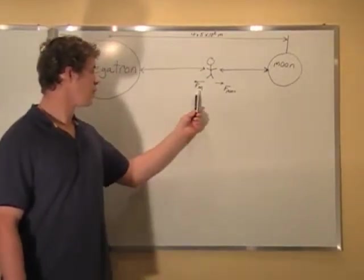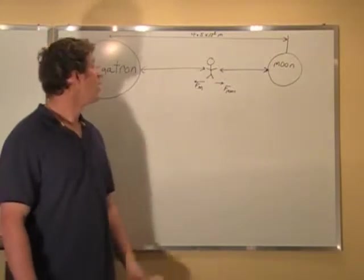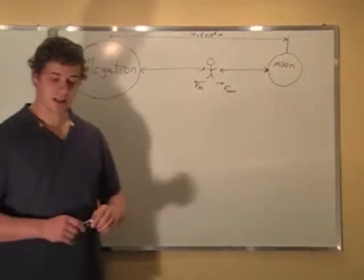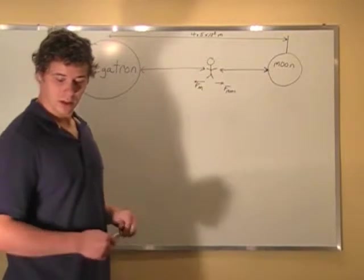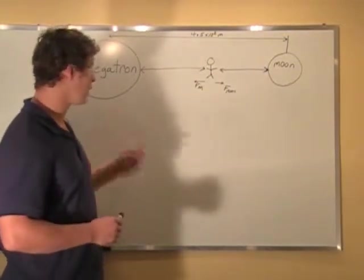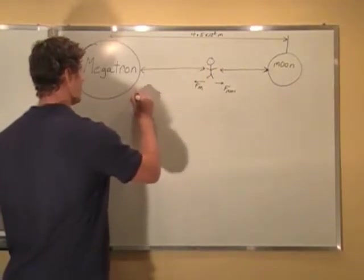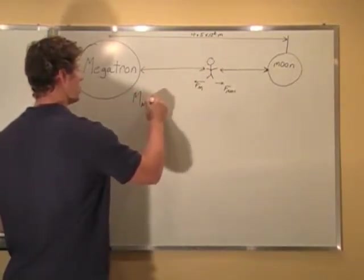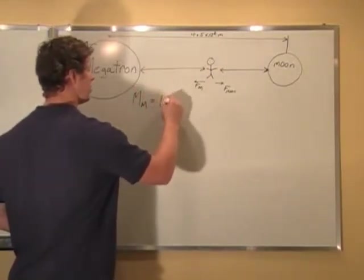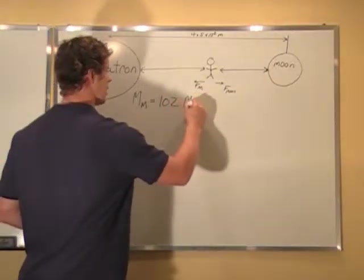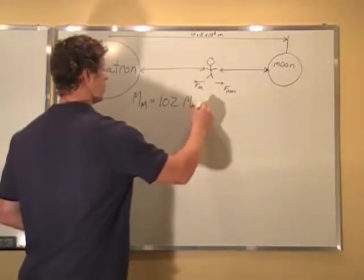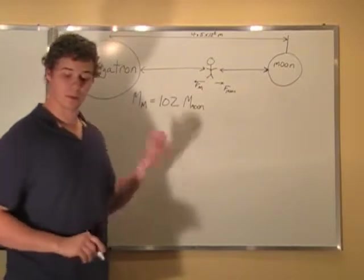So force from Megatron equals the force of the moon. What they tell us is that the mass of the planet Megatron is 102 times the mass of the moon. So that's the first piece of information.